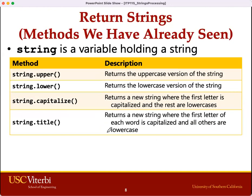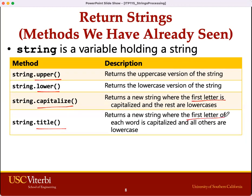Here are the functions we saw previously in class. These functions return a copy of the string with some modification. The upper function returns the uppercase version of the string. The lower function returns the lowercase version. capitalize returns the entire string with the first letter in uppercase. And the title function changes the first letter of each word in the string to uppercase.